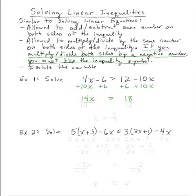So now I can isolate the variable by dividing by 14 on both sides. Since I'm dividing by a positive number, there is no need to adjust the inequality symbol. And I would write that x is greater than 18 over 14, which can be reduced by a factor of 2 to 9 over 7. So x is greater than 9 sevenths.